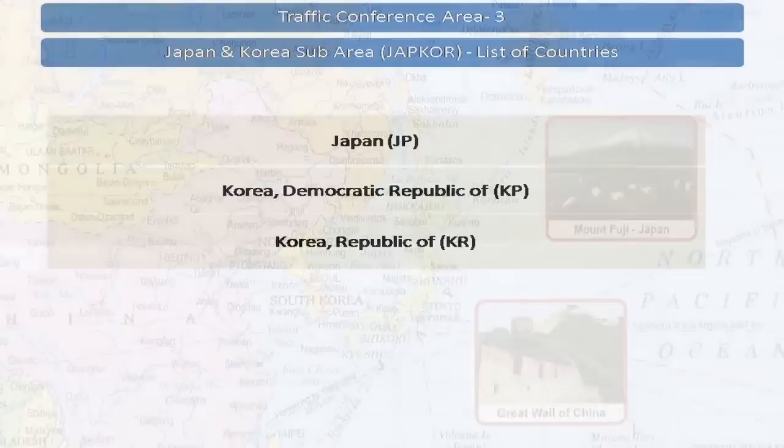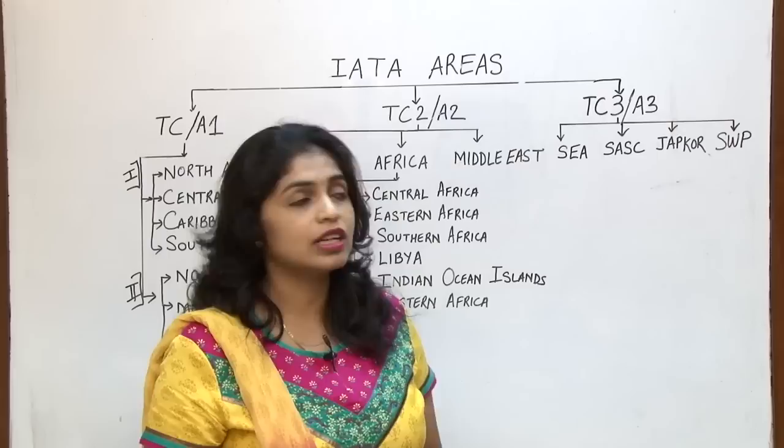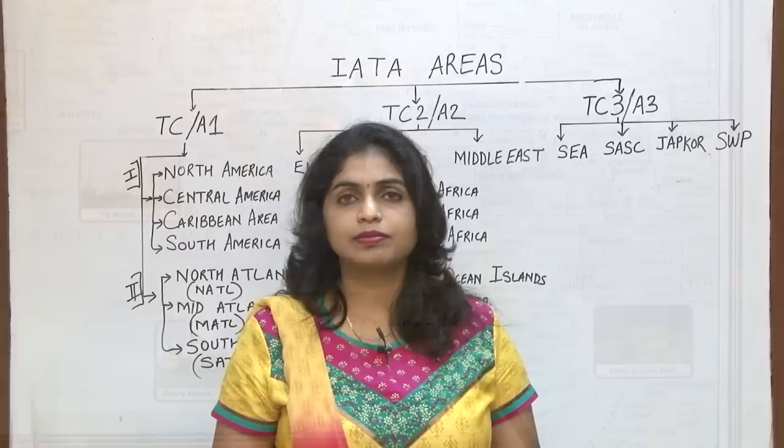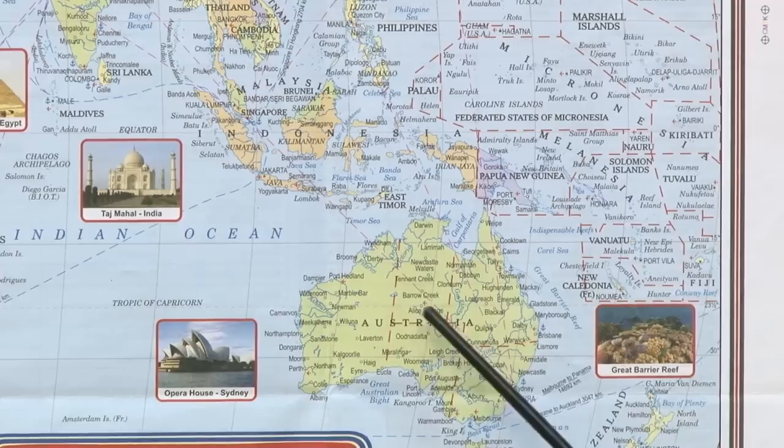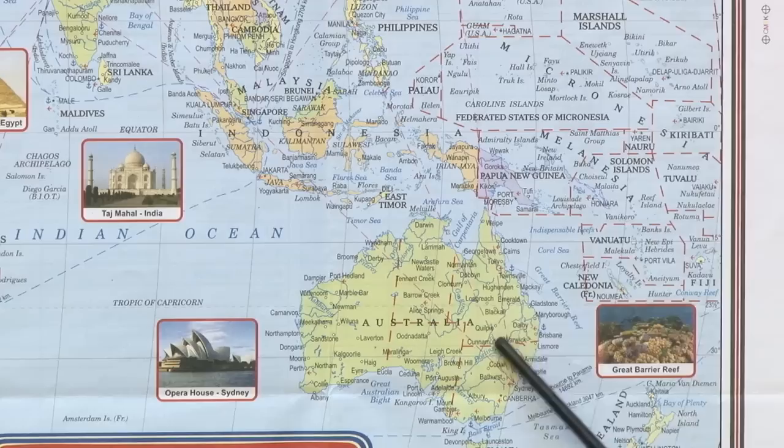Let us now check the list of countries included in South West Pacific area. These are the countries which will fall under South West Pacific sub area of area 3. You can roughly decide this as Australia and the neighbouring islands — so this will fall under South West Pacific area.